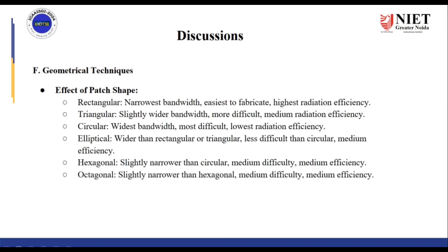The last technique is using geometrical techniques — using different shapes for the patch. The patch can be rectangular, triangular, circular, elliptical, hexagonal, or octagonal. Using a rectangular patch gives narrow bandwidth. Triangular gives slightly wider bandwidth. Circular gives the widest bandwidth of all. Elliptical gives a bandwidth wider than rectangular or triangular. Hexagonal and octagonal give slightly narrower bandwidth than circular. All different patches have different difficulty levels to implement, and their radiation efficiencies vary.